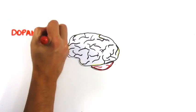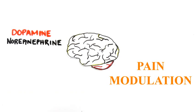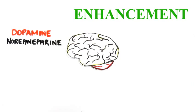These cannabinoids also affect the levels of dopamine and norepinephrine in your brain, often leading to a sense of euphoria, relaxation, pain modulation, and general enhancement of an experience, though sometimes causing anxiety.